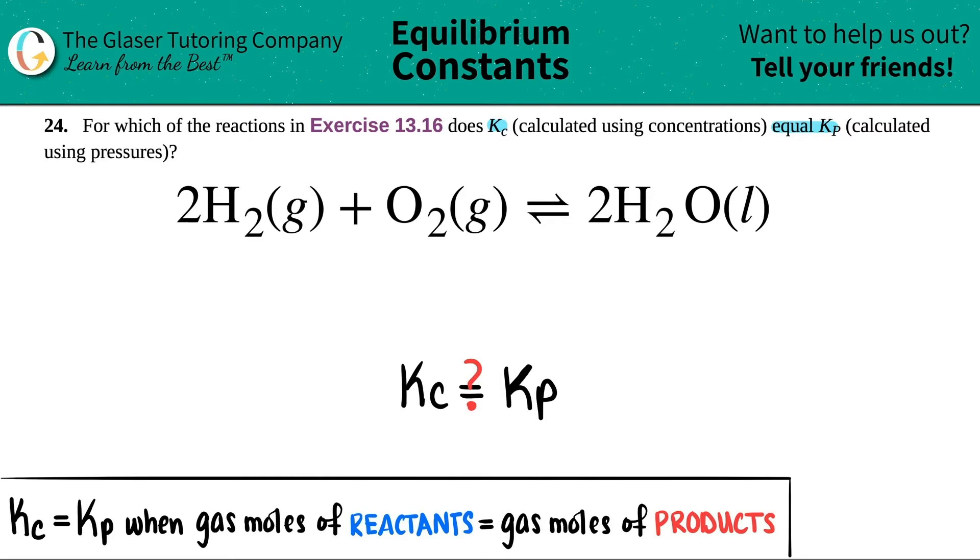How are we going to figure that out? Well, if the Kc equals the Kp value, that just means that the number of gas moles for the reactant side equals the number of the gas moles that are on the product side.